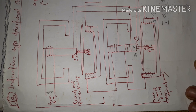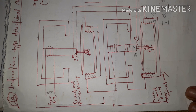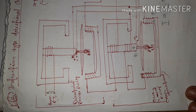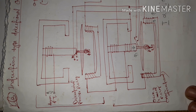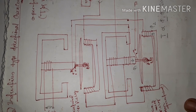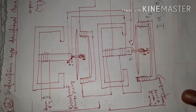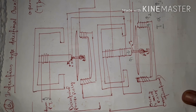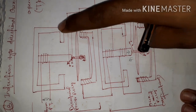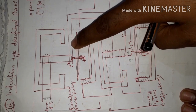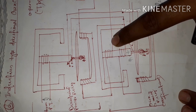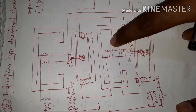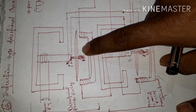In lecture number one we have already discussed the working principle of overcurrent relay, that is non-directional overcurrent relay. In lecture number two we also discussed directional power relay. In this lecture we discuss induction type directional overcurrent relay, which is the combination of both. Here the upper half represents the directional power relay whereas the lower half represents the non-directional overcurrent relay.